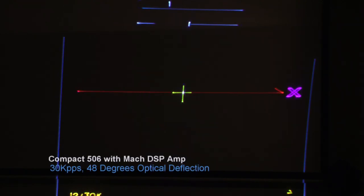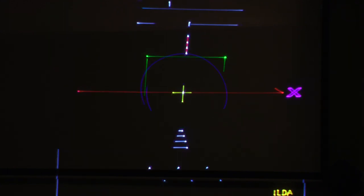48 degrees optical. Got a little skewing of that circle. Still usable. Pretty impressive. Let's take a look at 40k.